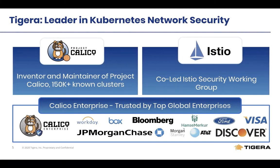Not only that, we know of more than 150,000 clusters out there today powered by Calico. We're also trusted by a long list of Fortune 500 enterprises using Calico Enterprise today. You can see some of the names listed here that are trusting us with Calico at scale, whether they're on-prem or public deployments of Kubernetes.